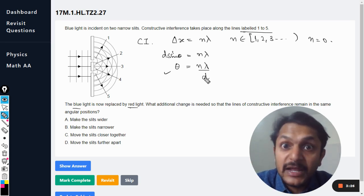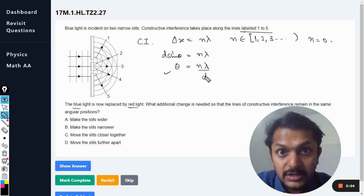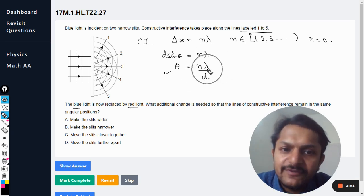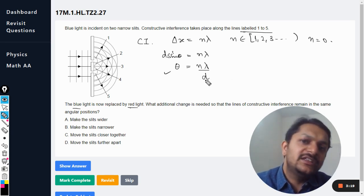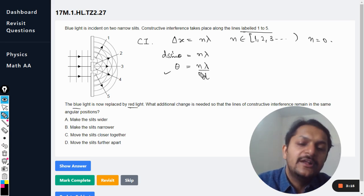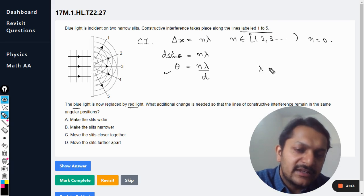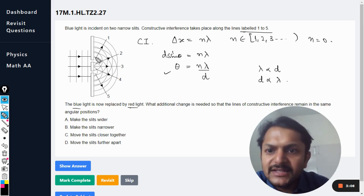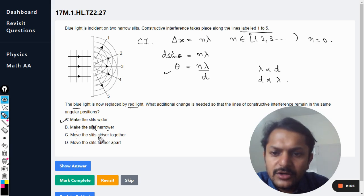So it means if you are increasing wavelength lambda, d should also be increased because theta is constant and n is also constant. And it means that lambda is directly proportional to d, or d is directly proportional to lambda, which means that make the slits more wider. So A is the correct answer. Make the slits narrower, no. Move the slits closer together, no. Move the slits further apart, okay.